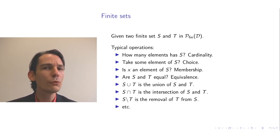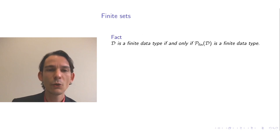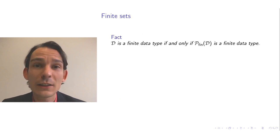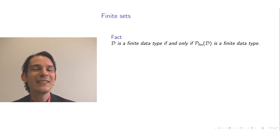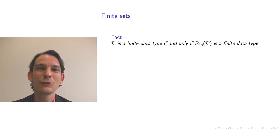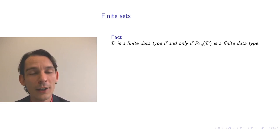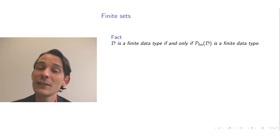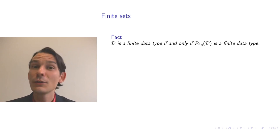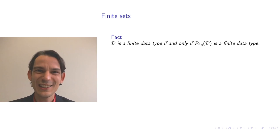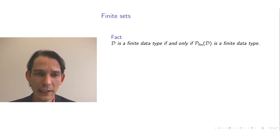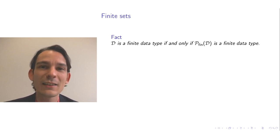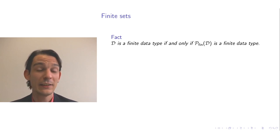Here is a nice property: D is a finite data type if and only if the data type P_fin(D) of finite sets of D is also a finite data type. So D is finite iff the finite sets over D are also finite.